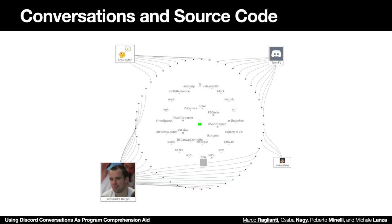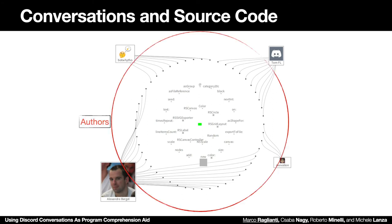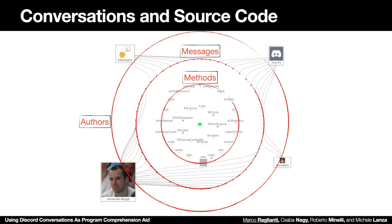Let's show what we propose as a representation of a conversation and what we extracted about it. First, there are authors on the outer circle, then messages, methods, classes, and the source code that is discussed in the conversation.